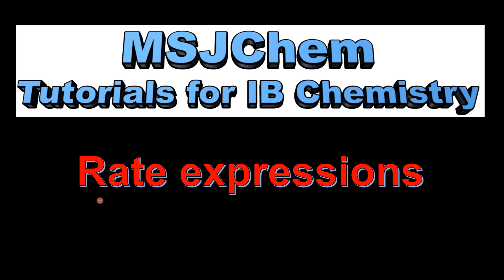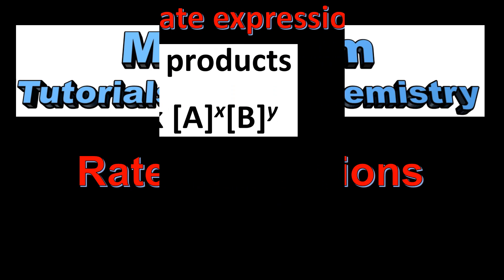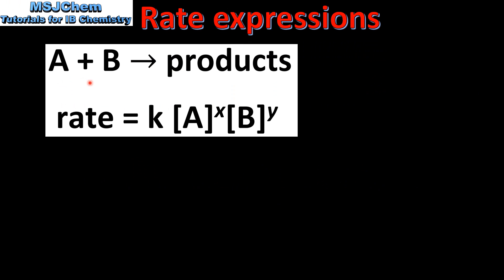This is MSJChem. In this video I'll be looking at rate expressions. The rate of reaction between two reactants A and B can be determined experimentally. The rate of reaction will be found to be proportional to the concentration of A raised to a certain power, and also the concentration of B raised to a certain power.